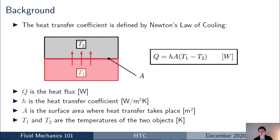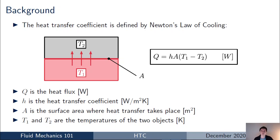Newton's law of cooling is very general — you can apply it for any two objects. It doesn't necessarily have to be a fluids heat transfer simulation. It's got two objects at different temperatures T1 and T2, and the heat flux between the two objects, given by capital Q, is proportional to the temperature difference T1 minus T2. The proportionality is defined by the heat transfer coefficient H and the surface area over which the heat transfer takes place.